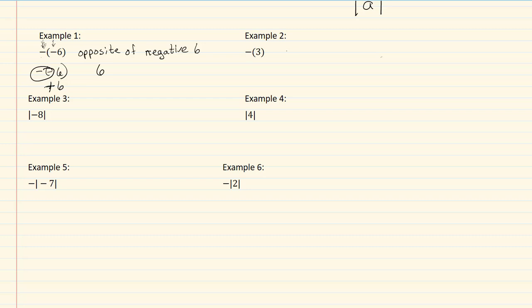In example two, we have the opposite of three. Well, the opposite of three is a negative three, so we write it with a dash mark in front of the three.